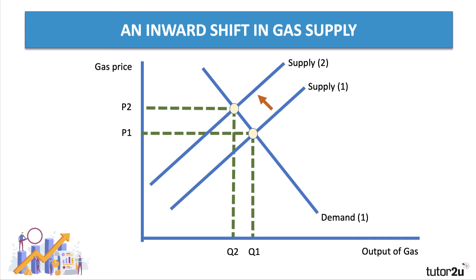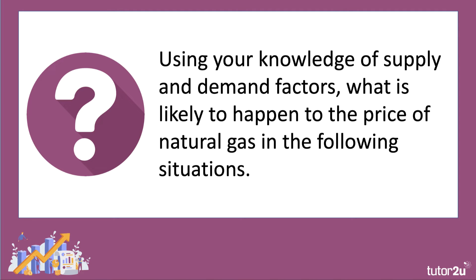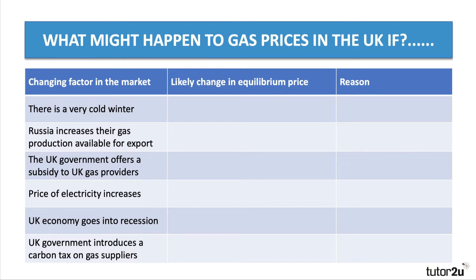Now for an exercise. I said to my students: using your knowledge of supply and demand factors, what is likely to happen to the price of natural gas in the following situations? There are six changing factors in the market for natural gas. For each one, answer two questions: what is likely to happen to the equilibrium price, and which curve has shifted and in which direction? You might want to pause the video and have a go.